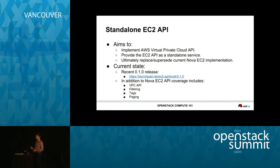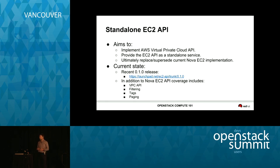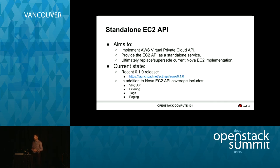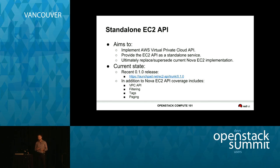IO-based NUMA scheduling is a fairly minor tweak to the NUMA topology filter. The NUMA topology filter is already responsible for aligning guests with the NUMA topology of hosts — the way CPUs, memory, and so on are laid out. Modern chipsets also have the ability to assign a PCIe lane with a specific socket on the server. If you're running on a different socket and trying to access that IO device, you'll get worse performance. The idea of this change is that where we're passing through an SR-IOV device — specifically a networking device — we want to make sure we place the guest on the socket related to that particular device lane.